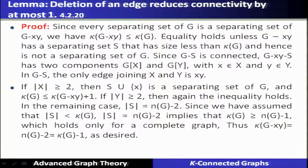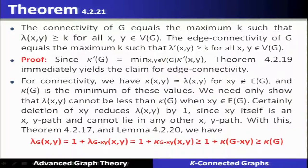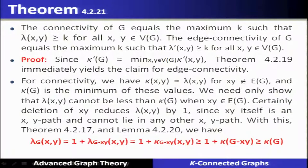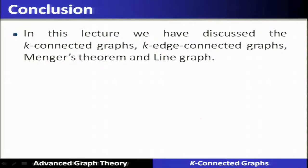Deletion of an edge will reduce the connectivity by at most one. The global version theorem says: the connectivity of G equals the maximum k such that lambda(x,y) ≥ k for all x-y pairs of vertices; and the edge connectivity of G equals the maximum k such that lambda prime(x,y) ≥ k for all x-y pairs. In conclusion, in this lecture we have discussed K-connected graphs, K-edge-connected graphs, Menger's theorem, and line graphs.